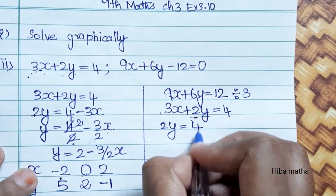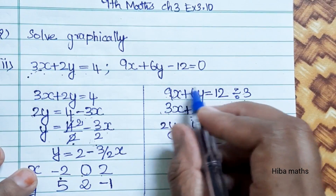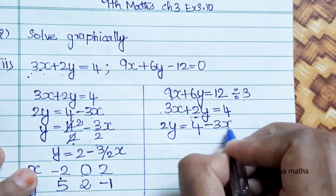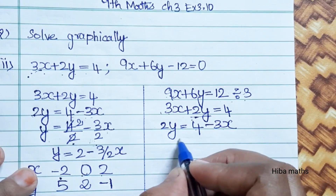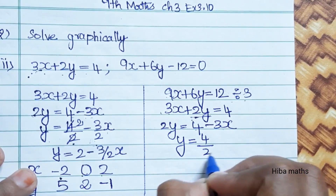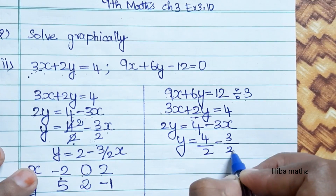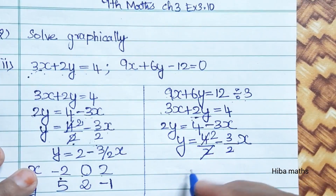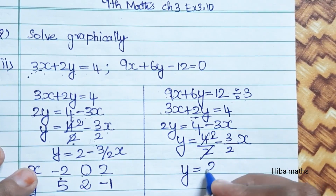Now, from 2y is equal to 4 minus 3x, we solve: y is equal to 4 by 2 minus 3 by 2 into x.